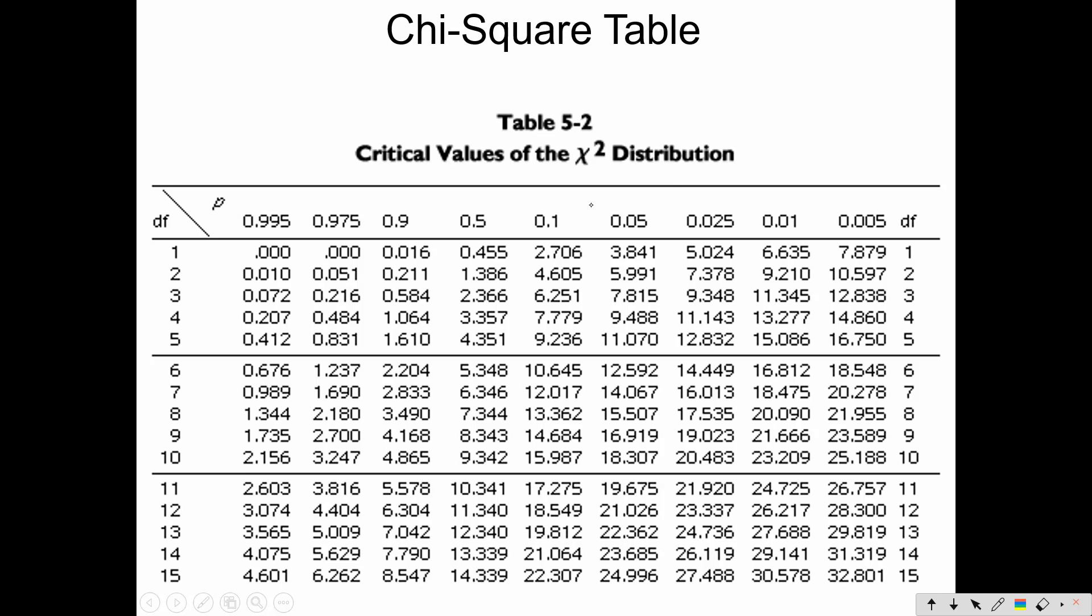Now, again, I've got four types of offspring. So I actually have three degrees of freedom. Remember, the degrees of freedom is the number of possible outcomes minus one. So four types of offspring minus one, three degrees of freedom. I'm using .05 as my probability value that I'm willing to accept. So I look at the three degrees of freedom, .05. I get 7.815. But my chi-square value was way higher than that. So I have to reject my hypothesis.